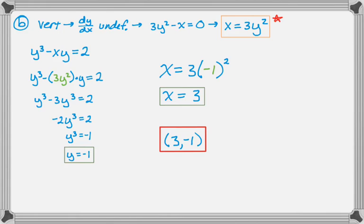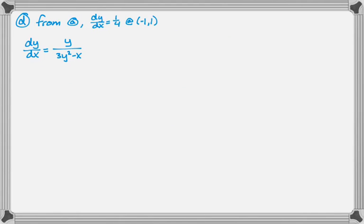The next part is to find the second derivative at the point where x equals negative 1 and y equals 1. I don't know why they didn't say at the point negative 1, 1, but they didn't. So let's do this. So I need the second derivative. So that's quotient rule.